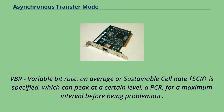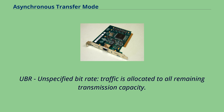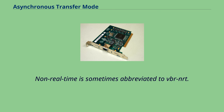VBR has real-time and non-real-time variants and serves for bursty traffic; non-real-time is sometimes abbreviated VBR-NRT. Most traffic classes also introduce the concept of cell delay variation tolerance (CDVT), which defines the clumping of cells in time. To maintain network performance, networks may apply traffic policing to virtual circuits to limit them to their traffic contracts at the entry points to the network — i.e., the user-network interfaces and network-to-network interfaces — through usage/network parameter control.